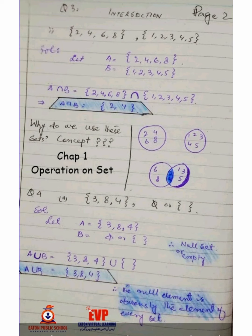For example, set A has elements {2, 4, 6} and set B has elements {1, 2, 3, 4, 5}. You have to take out the intersection. For union, you have to combine the elements — for example, a class of biology students and a class of computer science students combined to know how many students attend chemistry. If you have sets {3, 8, 4} and {1}, the union combines all of them.